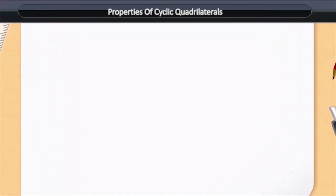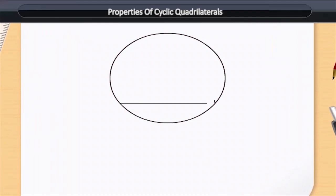Properties of cyclic quadrilaterals. Look at the circle. A quadrilateral is drawn to circumscribe the circle. ABCD is a cyclic quadrilateral, and here we will test and understand the two important properties of a cyclic quadrilateral.